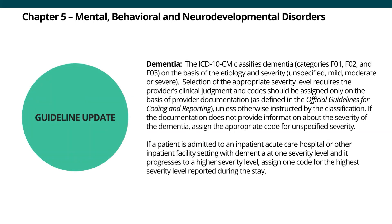The guideline updates for chapter five include a completely new guideline for dementia to help capture severity based on provider documentation. Selection of severity is based on the provider's clinical judgment and codes for severity should be selected only when documented by the provider; otherwise an unspecified severity code should be assigned. For inpatient settings, if the patient is admitted with dementia at one level of severity and during hospitalization progresses to a higher level, the code for the highest severity should be assigned.